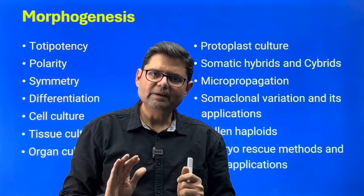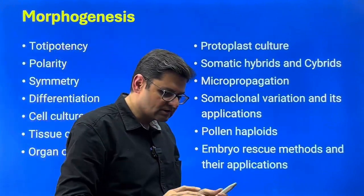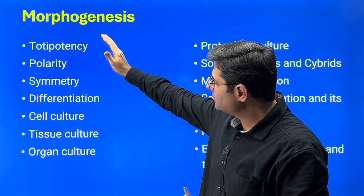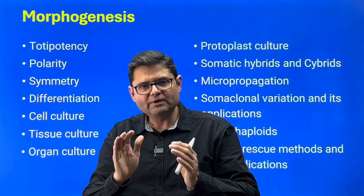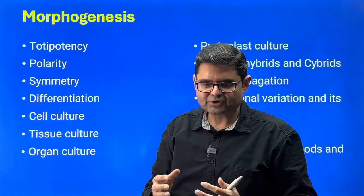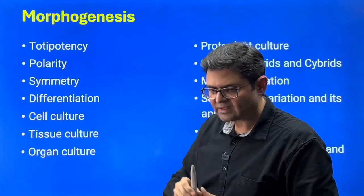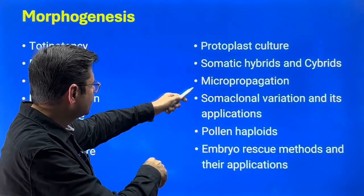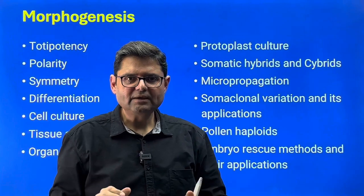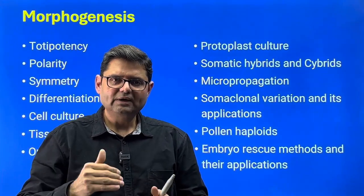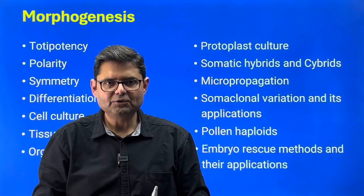Morphogenesis is a small, conceptual, not fact-intensive section from which a good number of questions are asked. The foundational topics are totipotency, polarity, symmetry, and differentiation — four foundational properties in plant tissue culture. The remaining topics are all plant tissue culture techniques: cell culture, tissue culture, organ culture, protoplast culture, somatic hybrids and cybrids, micropropagation, somaclonal variations, pollen haploid, and embryo rescue methods. For each technique, cover what it is, how it operates, application areas, and limitations.